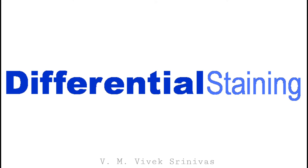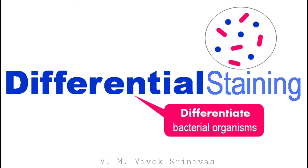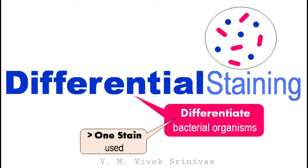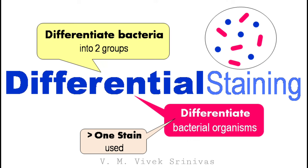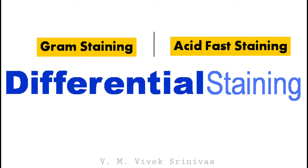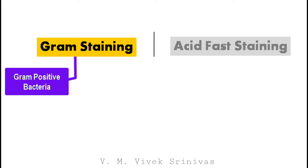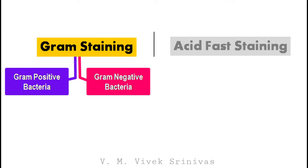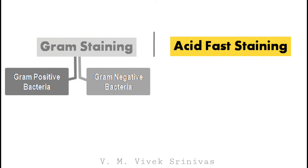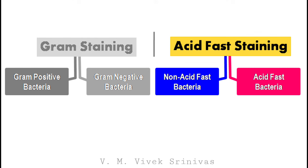Next, the differential bacterial staining technique. This is used to differentiate bacterial organisms. Here more than one stain is used. This technique is used to differentiate and classify bacterial organisms into two groups. Gram staining and acid-fast staining are the differential bacterial staining techniques. Gram staining differentiates bacteria into gram positive and gram negative bacteria. Acid-fast staining differentiates bacteria into acid-fast and non-acid-fast bacteria.